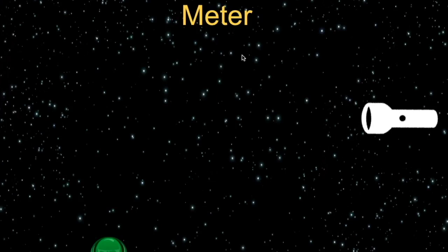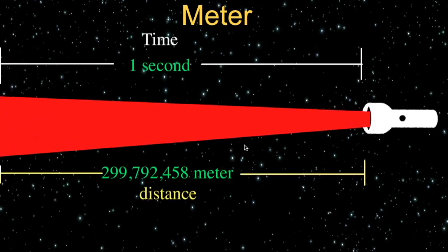Let's define 1 meter distance with respect to the light. Before defining this length, you should know what distance light travels in 1 second in a vacuum. So, light exactly travels 299,792,458 meters of distance in 1 second.